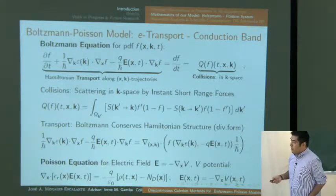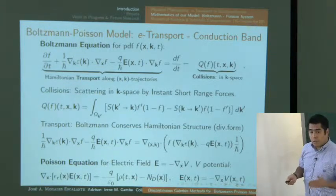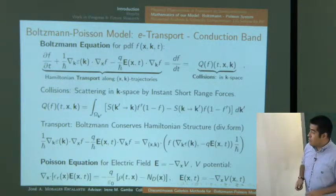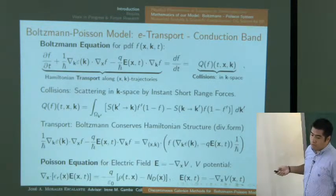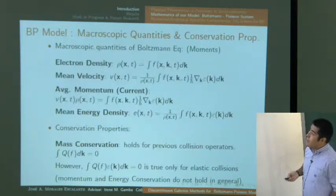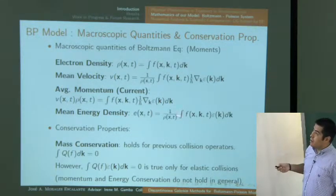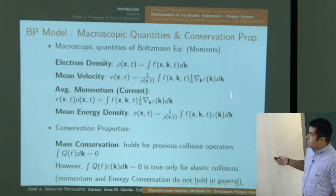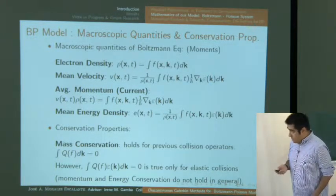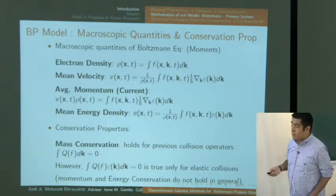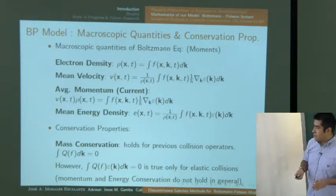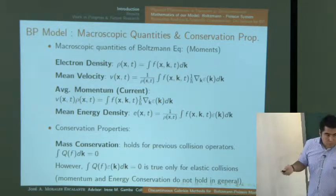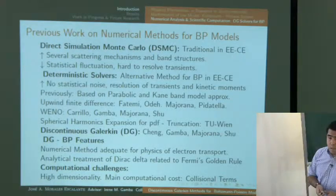In the Boltzmann-Poisson system, the electric field is related to the charge density — it's not an imposed force but depends on the distribution of charges in the domain. The electric field is the negative gradient of the potential. Like any Boltzmann problem, you have microscopic quantities as moments: electron density, average velocity, average momentum, and energy density. In Boltzmann for semiconductors, mass conservation holds but momentum and energy conservation do not hold in general unless the collision operator has certain properties.